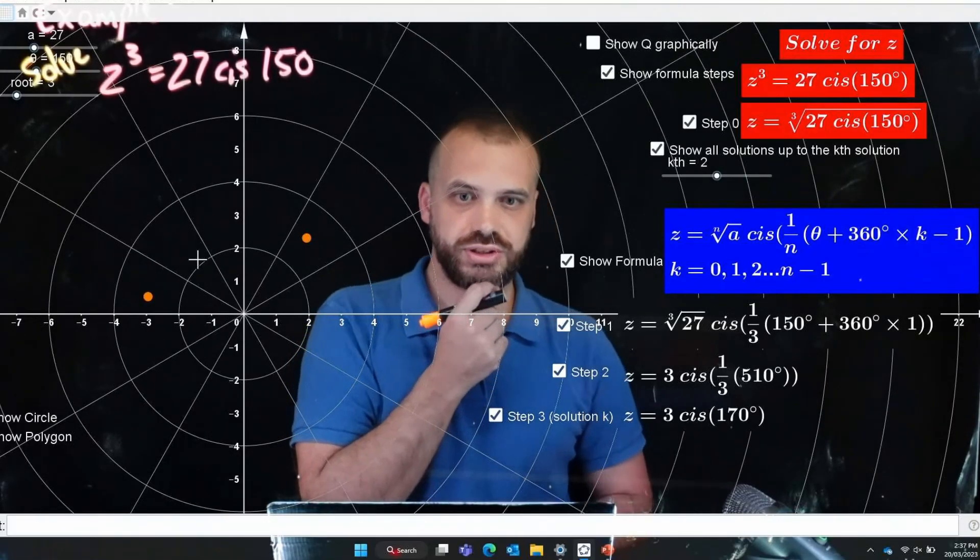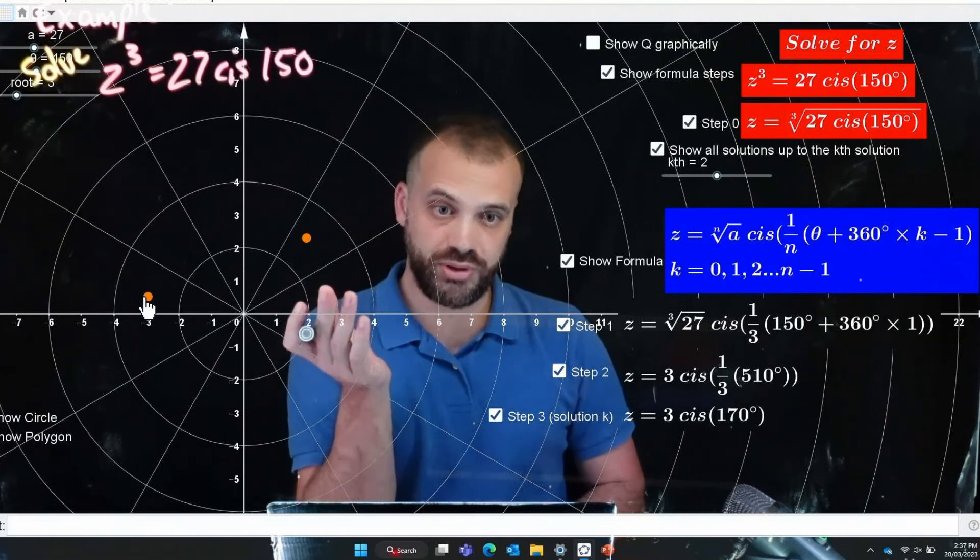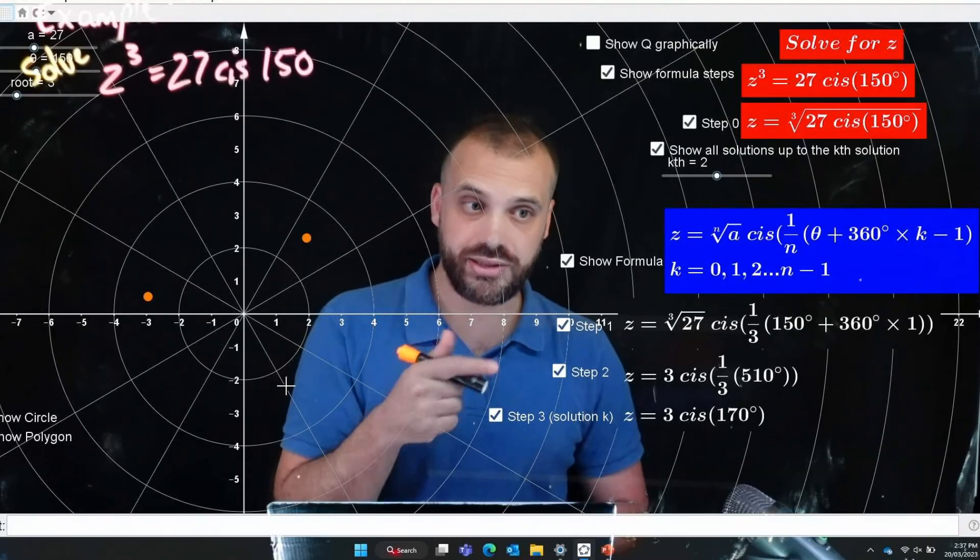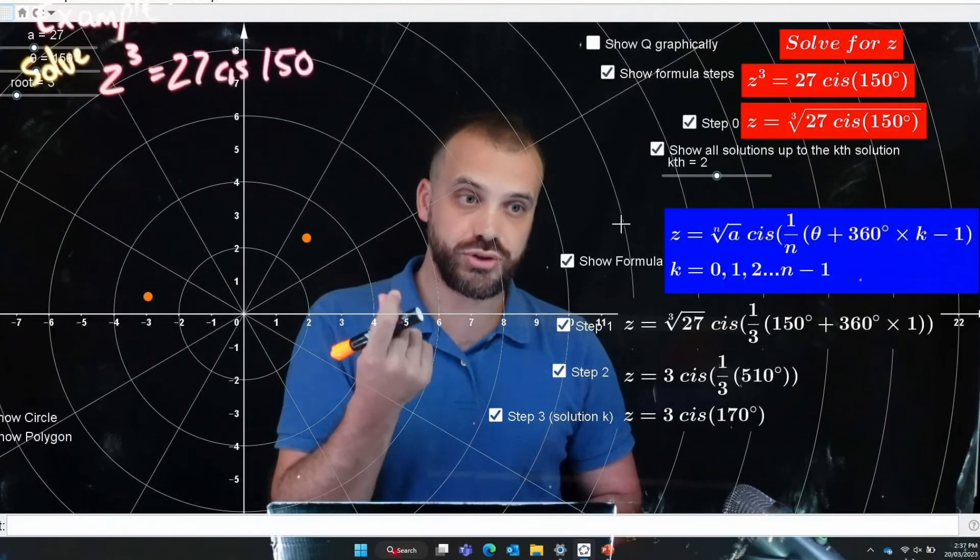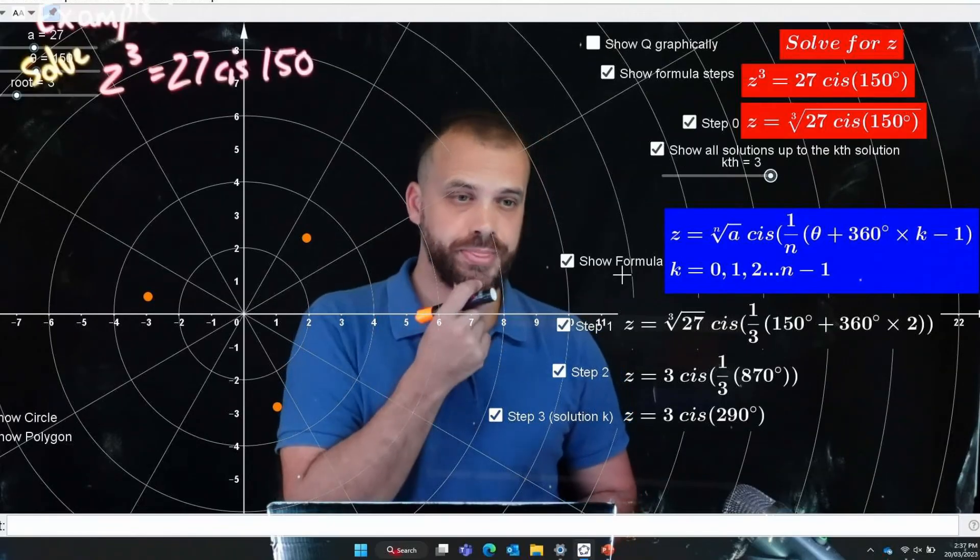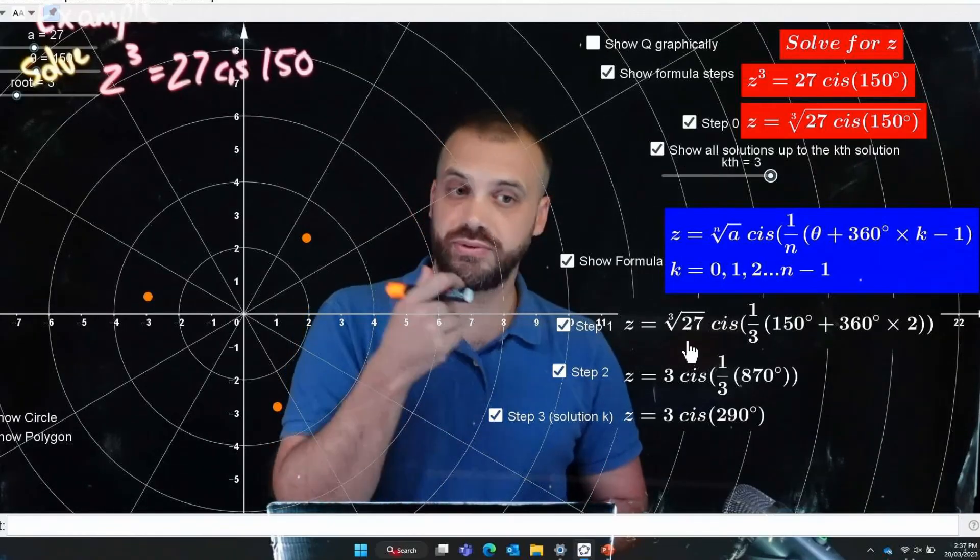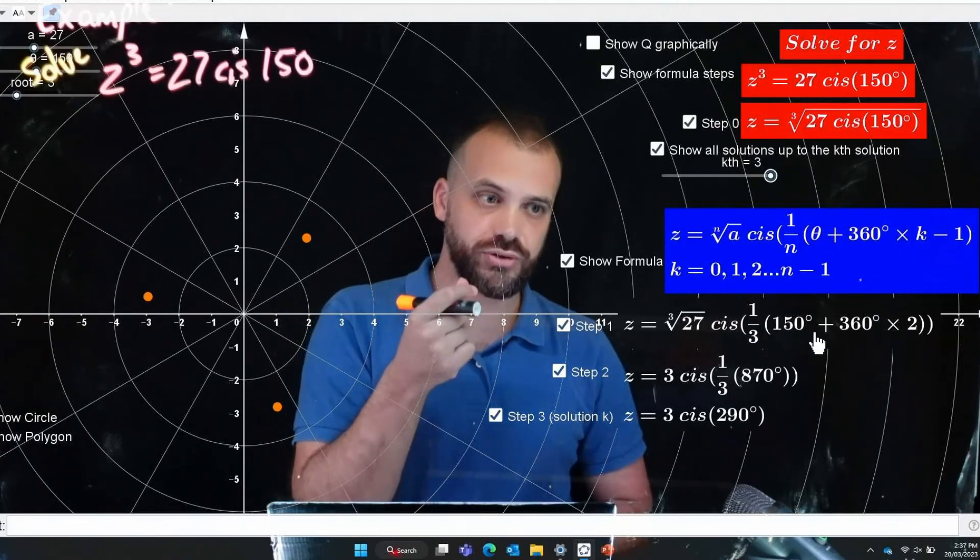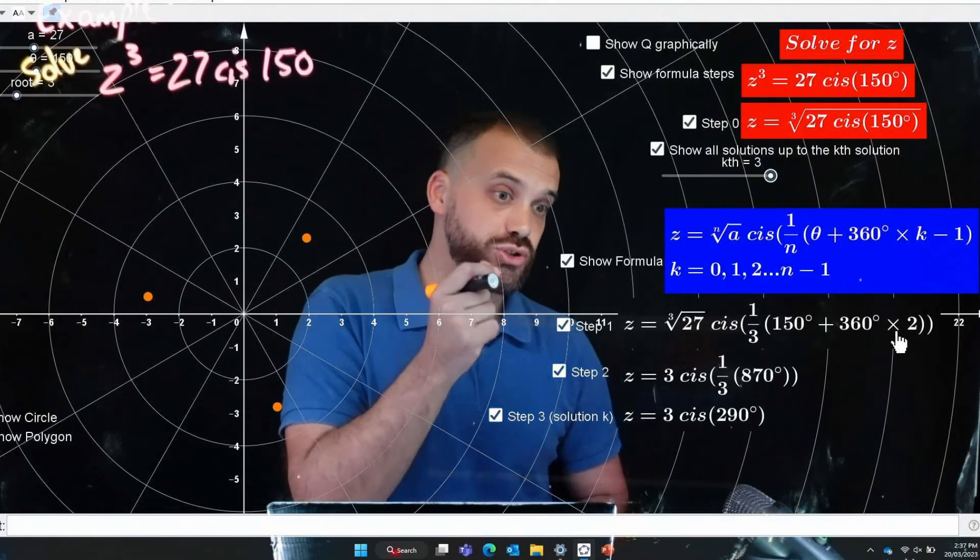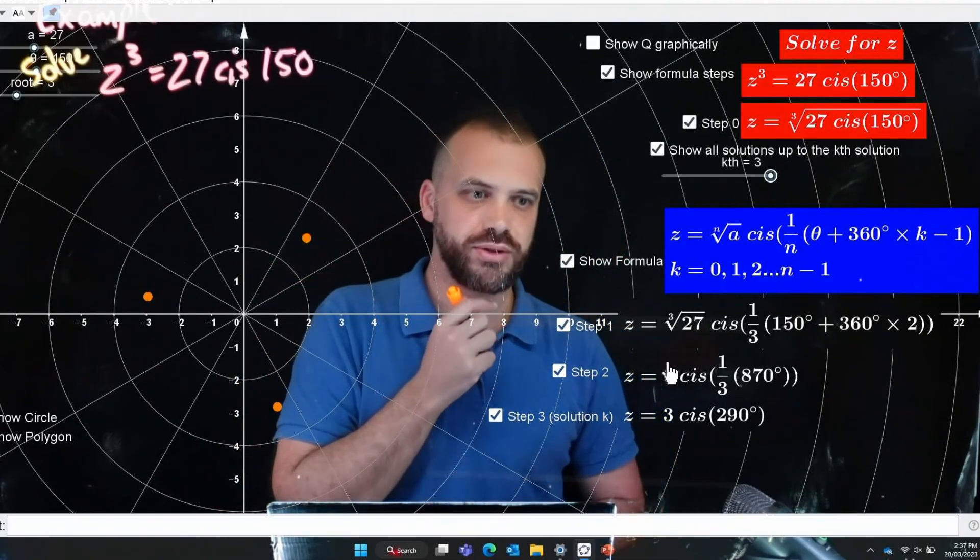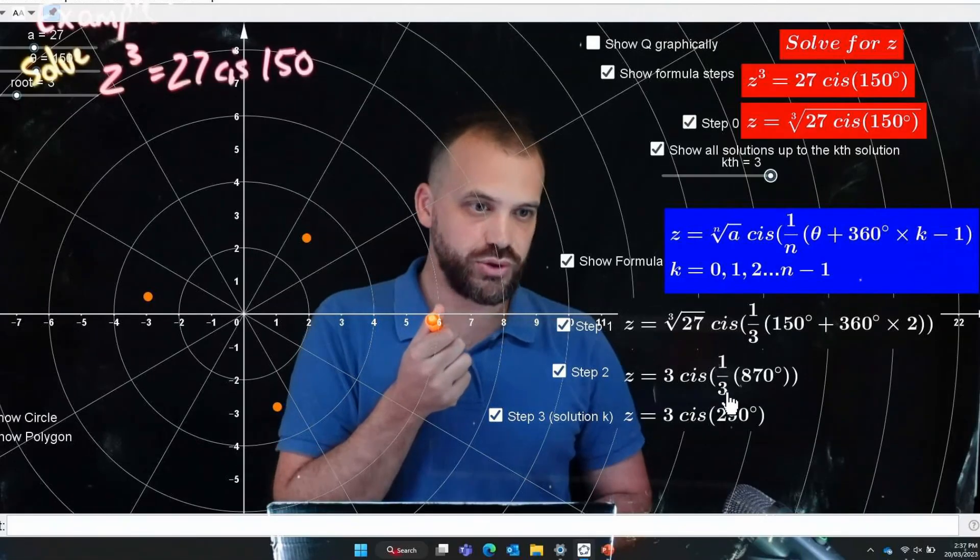First solution second solution and you should be thinking well I know two solutions the third one's going to be over here somewhere I can find it easily, of course we can do it using our formula as well. So the cube root of 27 that doesn't change, cis one third of 150 degrees plus 360 times 2 because we're trying to find our third solution so k minus 1, sub all of that in one third of 870 which is 3 cis 290 which is down there.